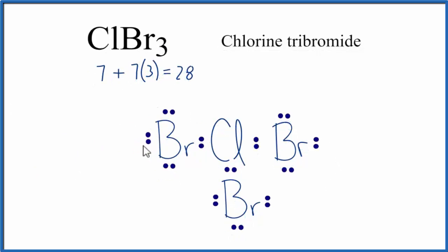At this point, we've used 24 valence electrons. All the bromines have octets. The chlorine has 6, and we have 4 valence electrons left over.